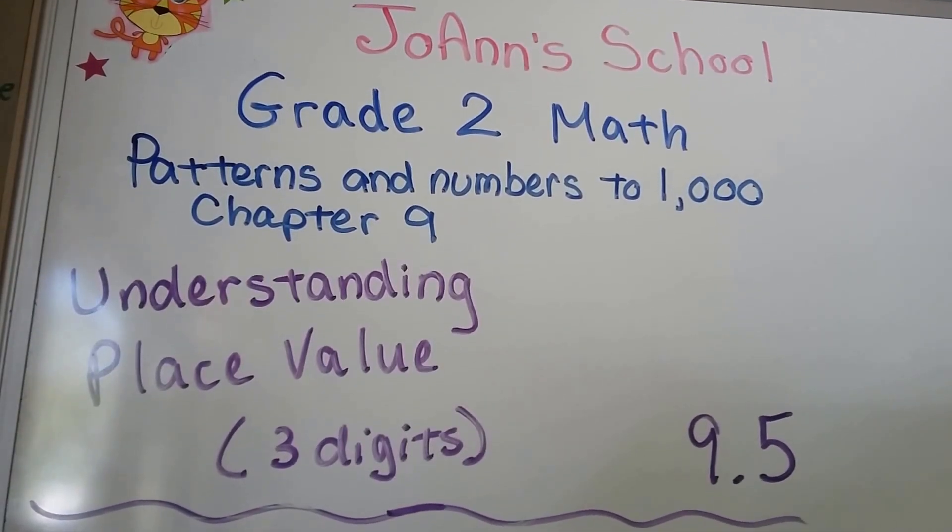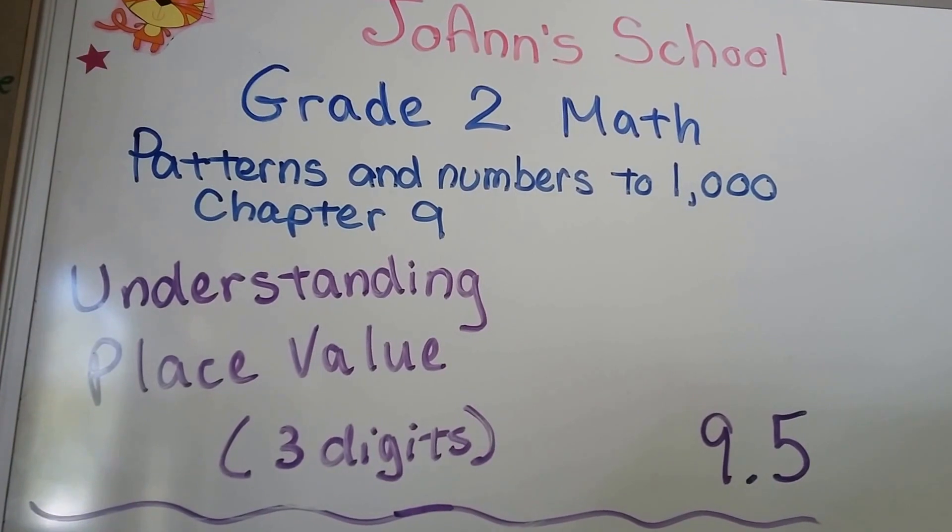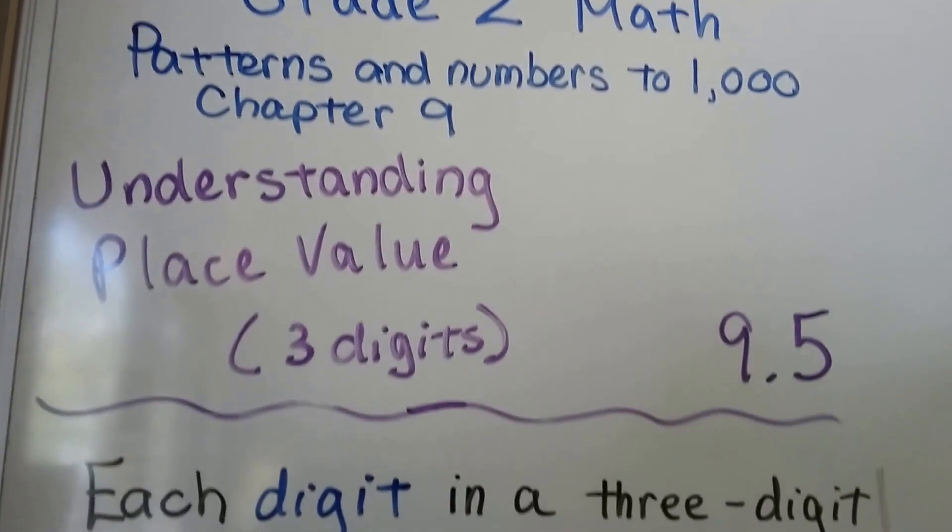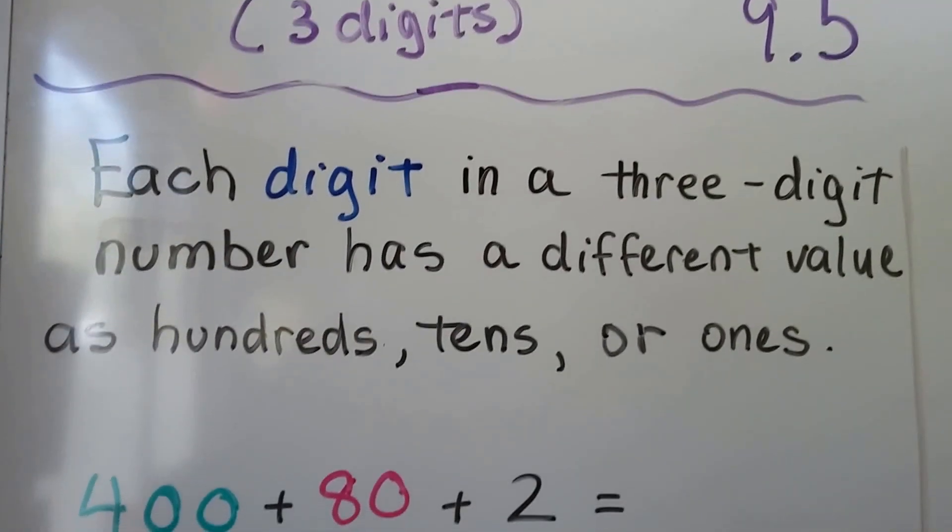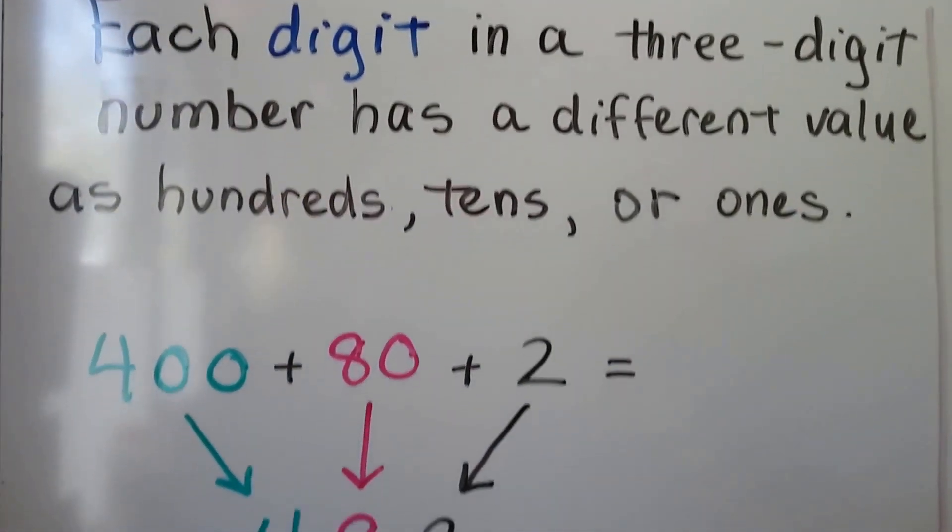This is understanding place value. It's for three digits and it's less than 9.5. Each digit in a three-digit number has a different value as hundreds, tens, or ones.